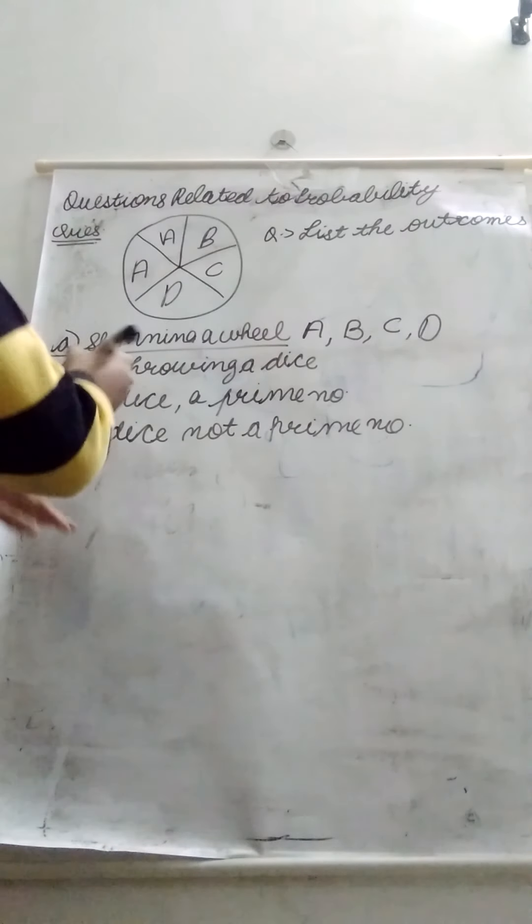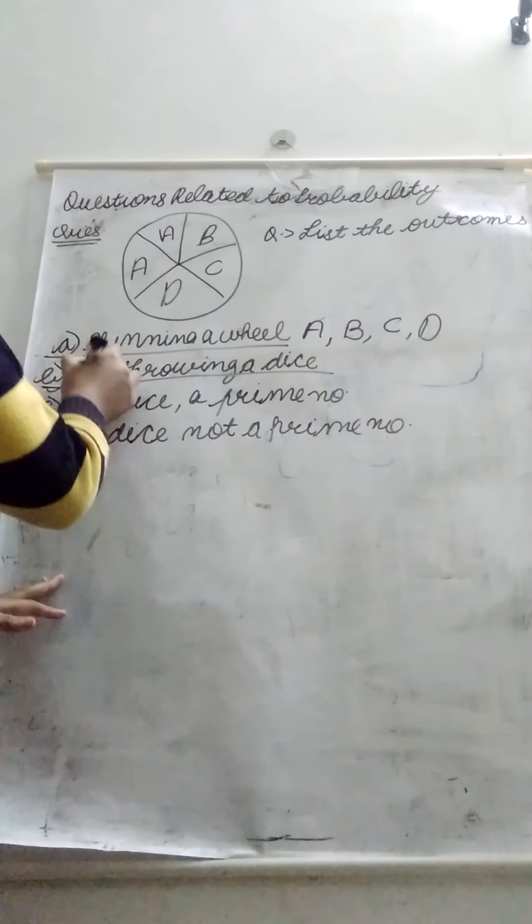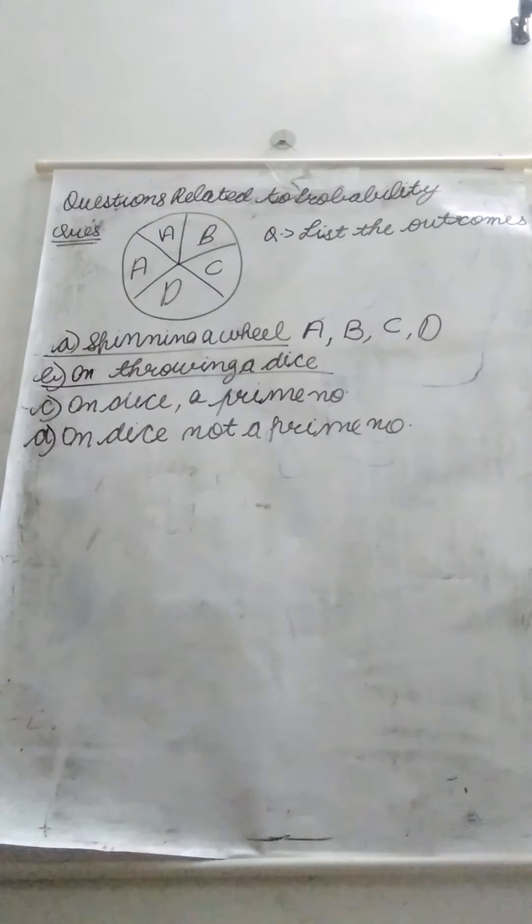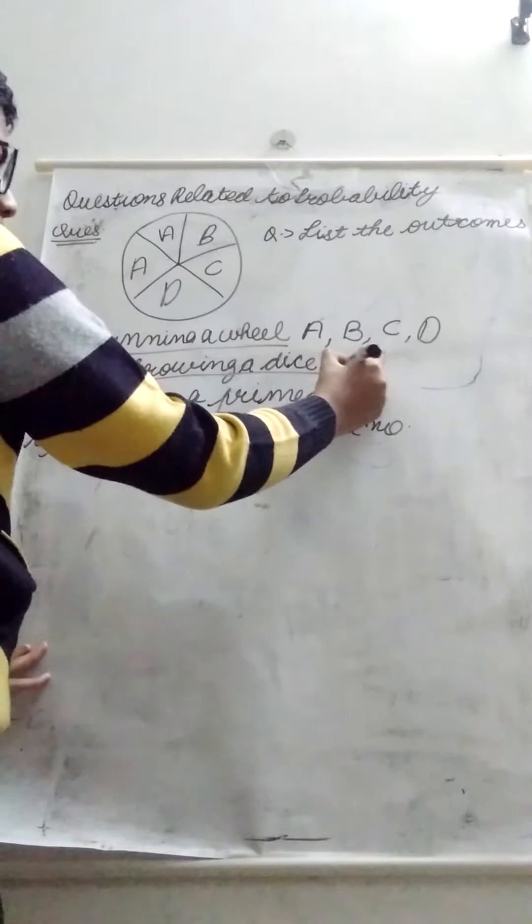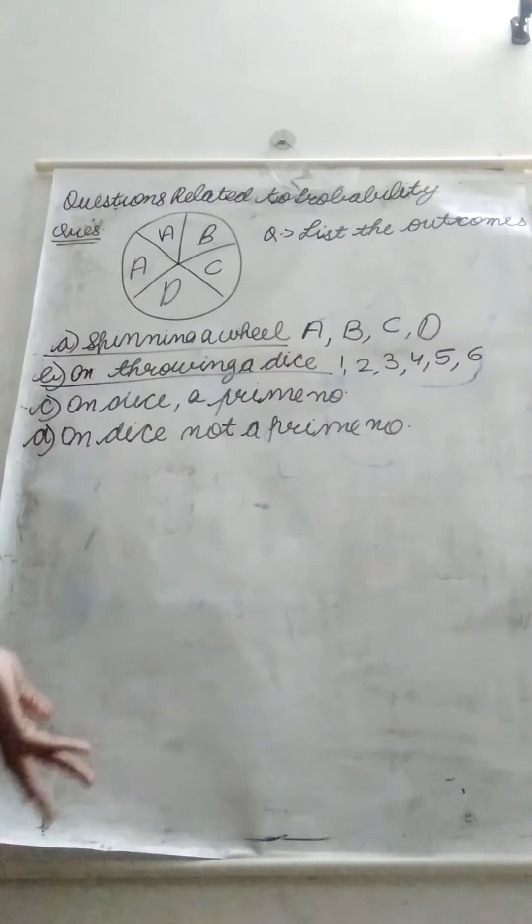Next is on throwing a dice. So when we throw dice, what outcomes will become? One, two, three, four, five, and six. So these will be the outcomes.